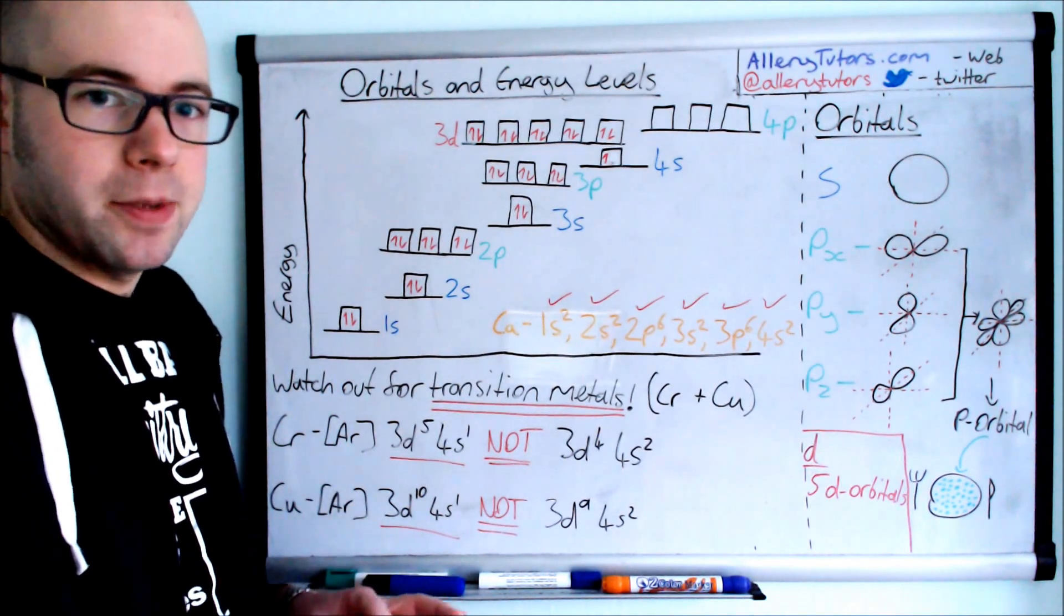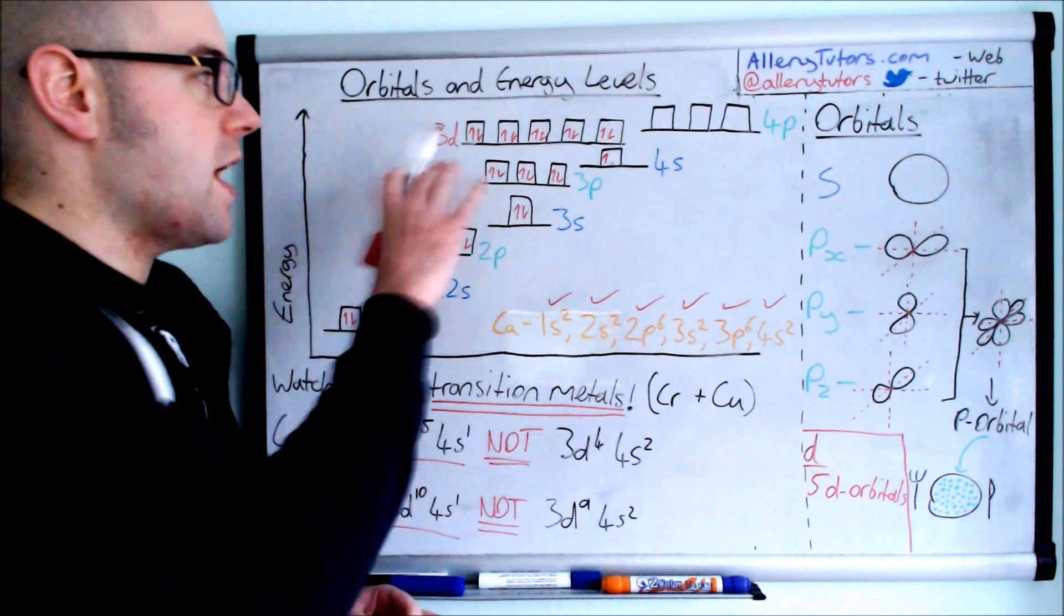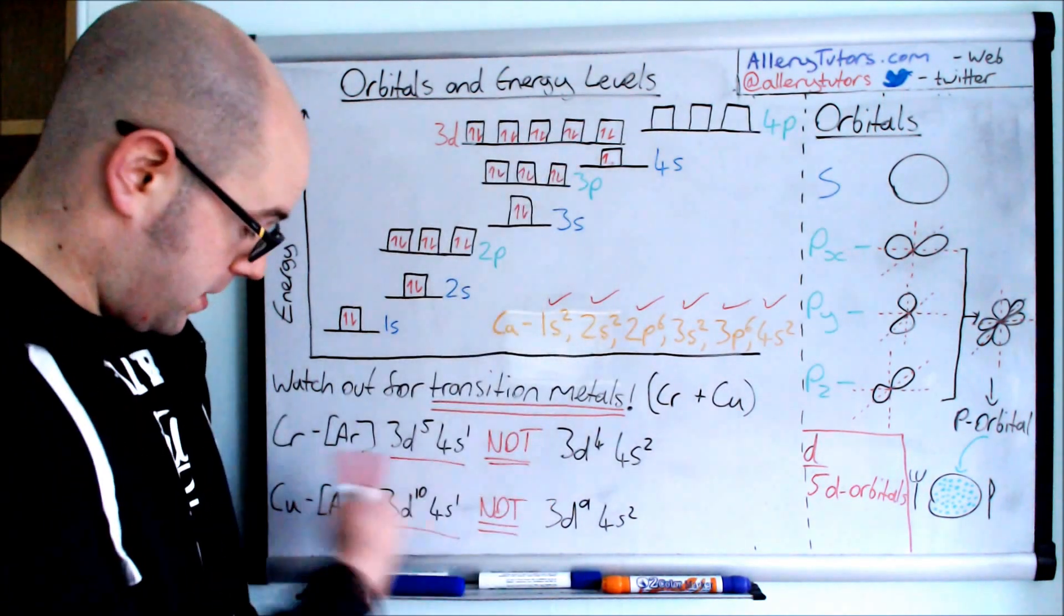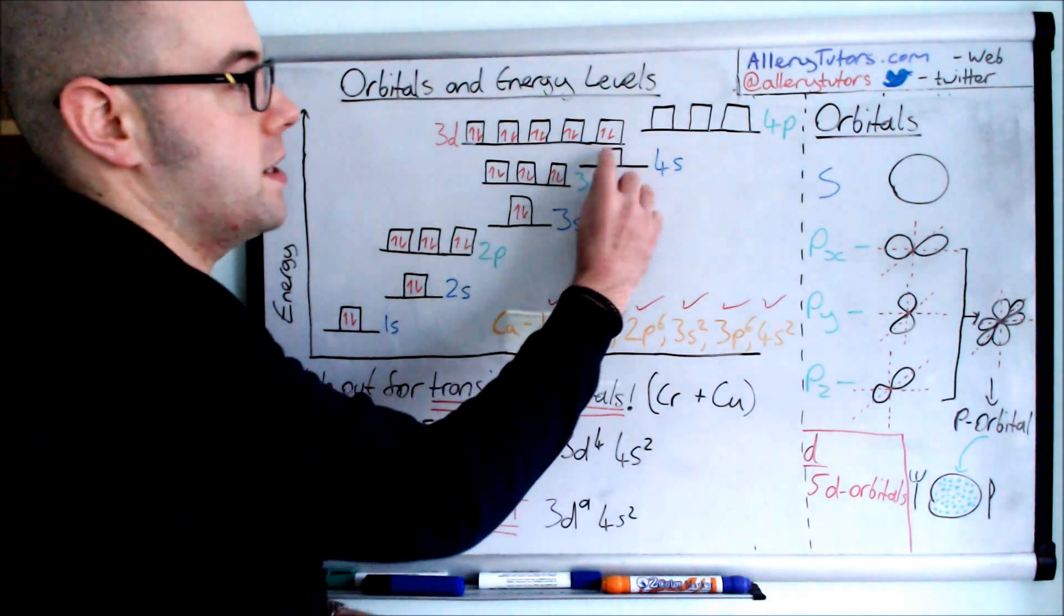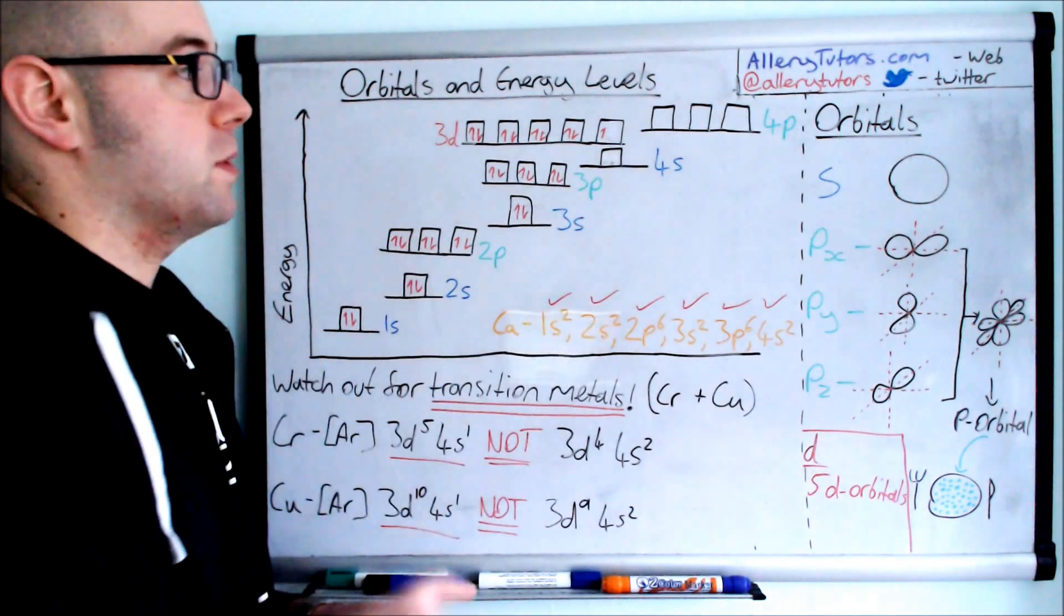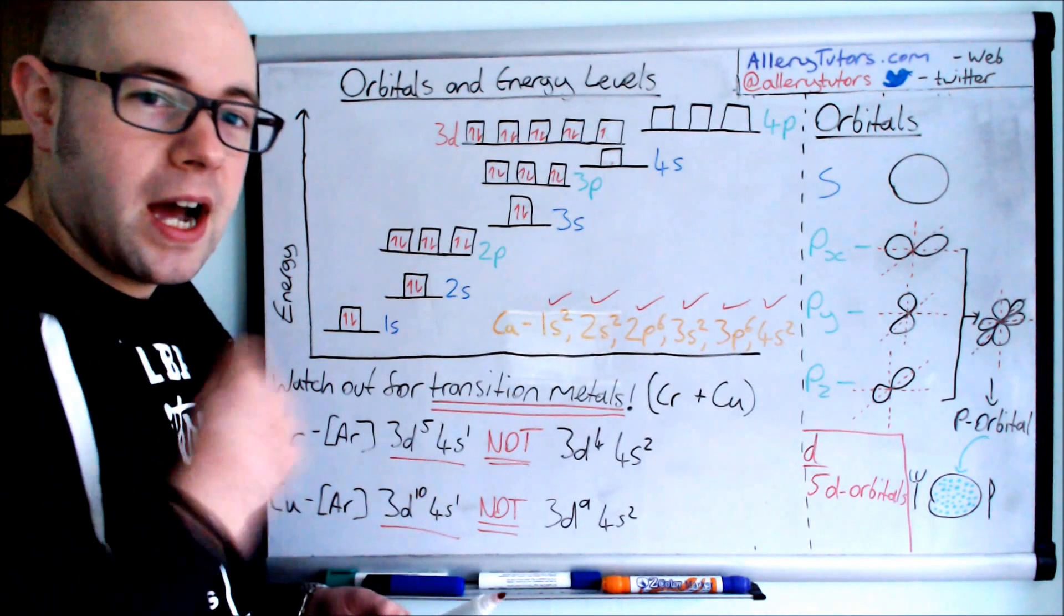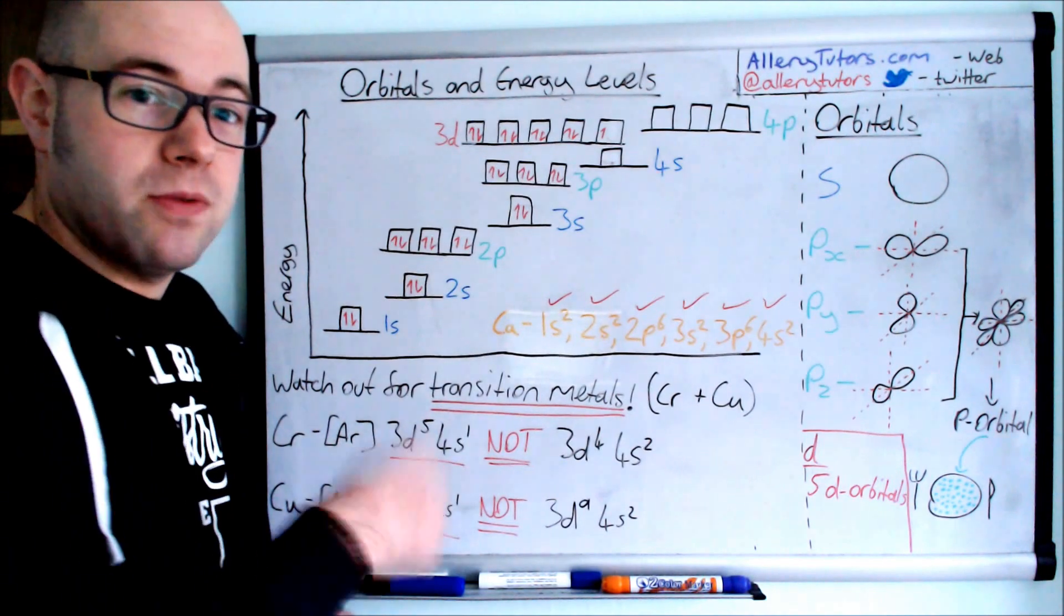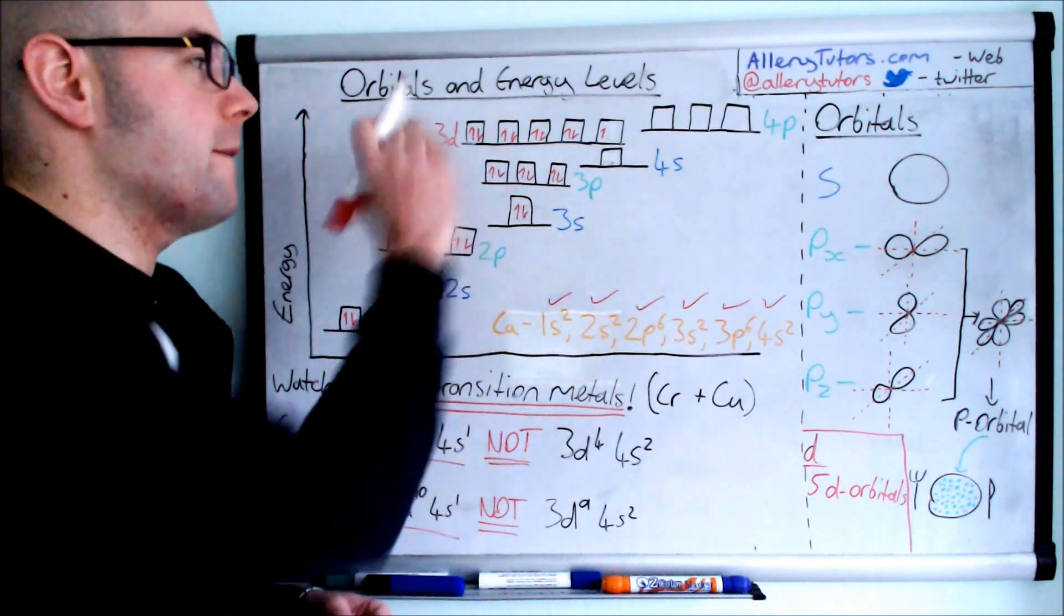When we ionize these elements, especially transition elements, we actually remove an electron from the 4s orbitals first, then we remove from the 3d orbital. For example, if we take copper 2+, the configuration would be 3d9. It wouldn't have any electrons in the 4s. This is a bit weird, because actually when we're ionizing or removing electrons, the 4s is of higher energy. So we remove the electrons from the 4s orbital first, before the 3d orbital. That's really important.